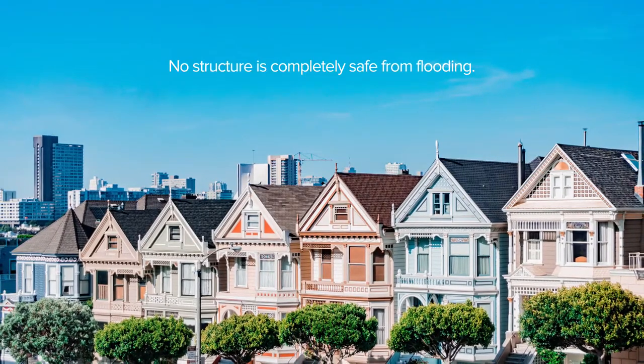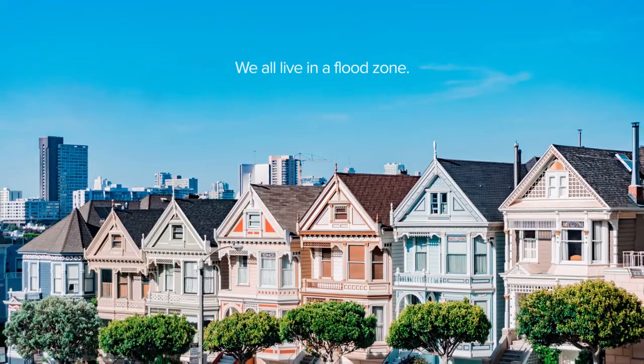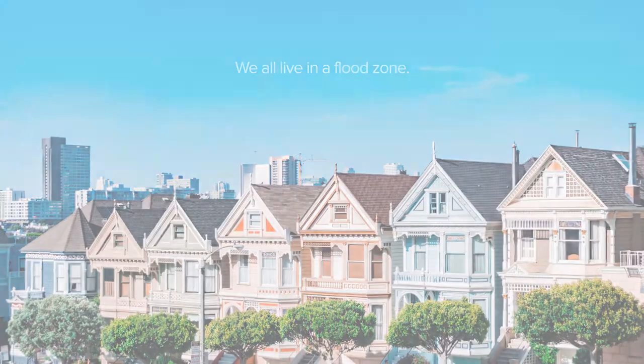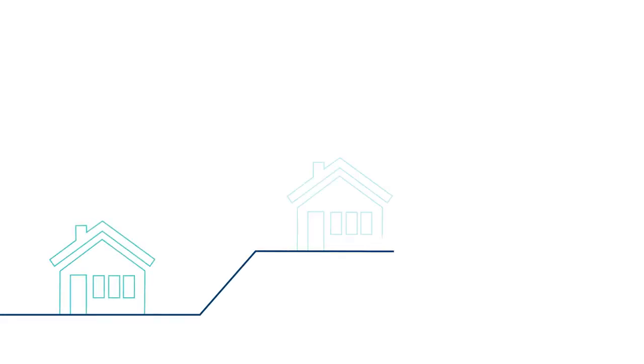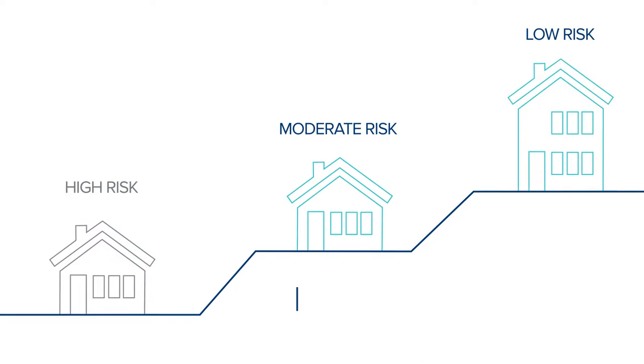No structure is completely safe from flooding — we all live in a flood zone. The structure could be located in a low to moderate risk flood zone, which is shown as B, C, or X zone on a flood map.